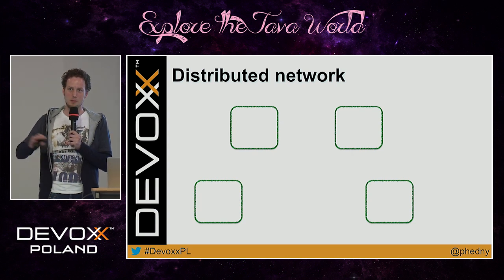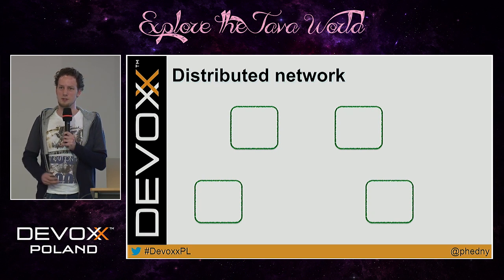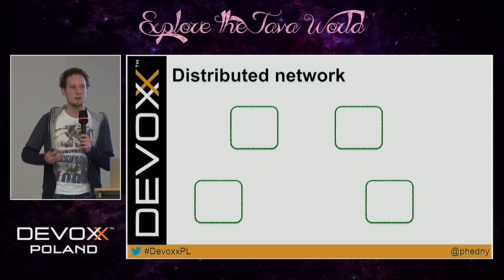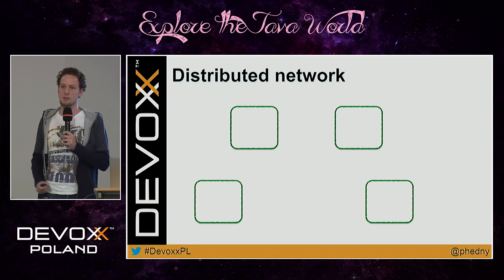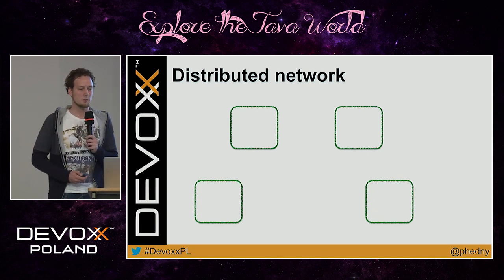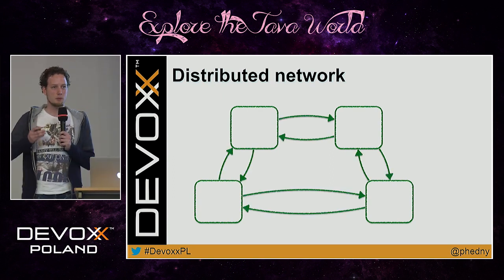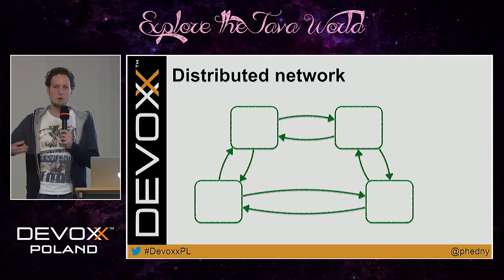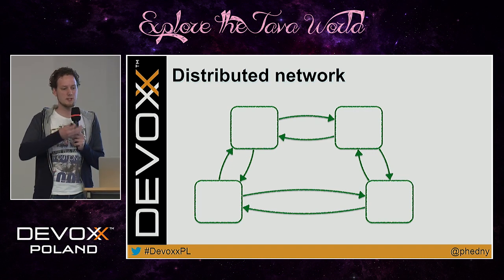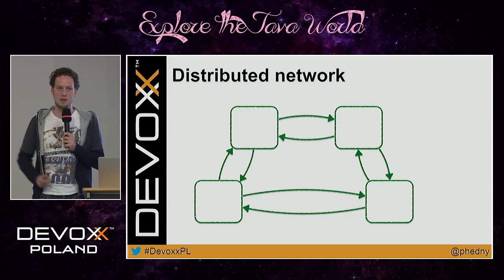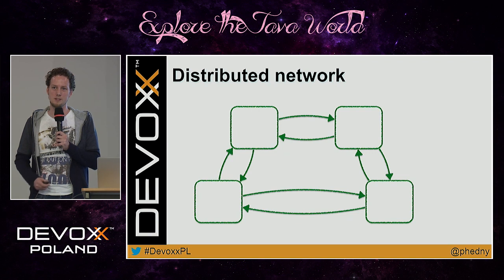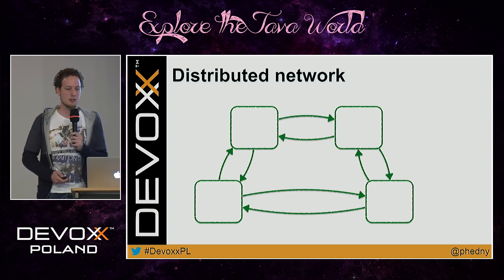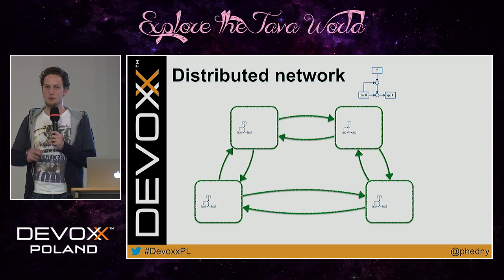The next ingredient is a distributed network. I've created one here with four nodes separated across different persons or organizations — not one organization running a cluster like a Cassandra cluster, but actually distributed across organizations. Those nodes need to communicate, so we add connections. Messages can be passed from one node to another, and nodes can forward messages, so you don't need to connect everything to everything.